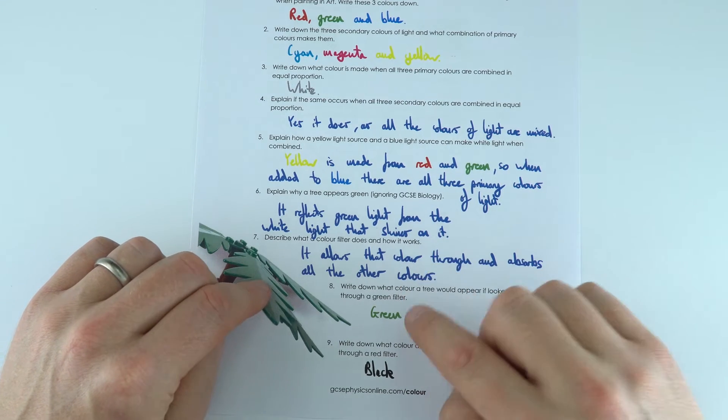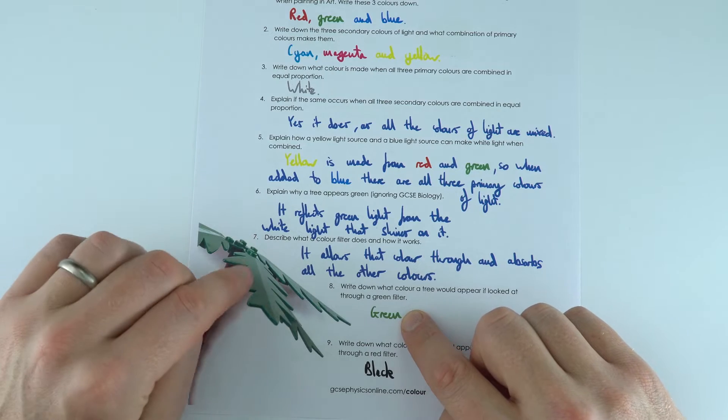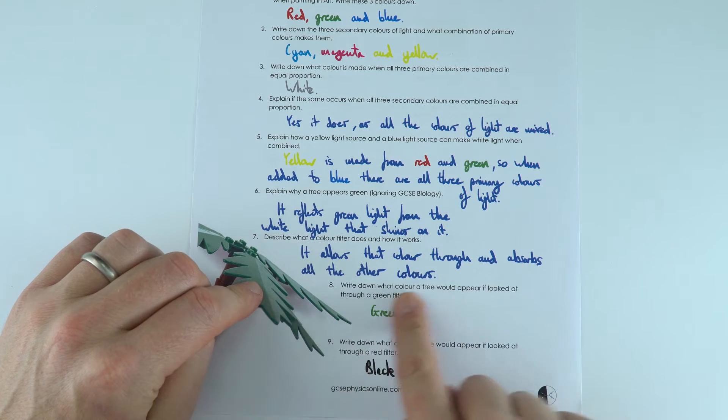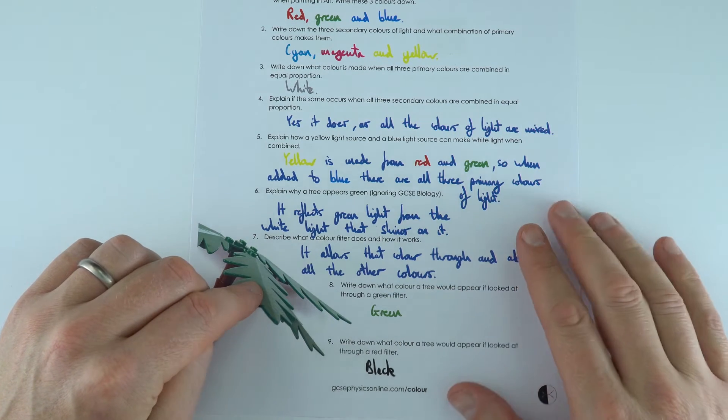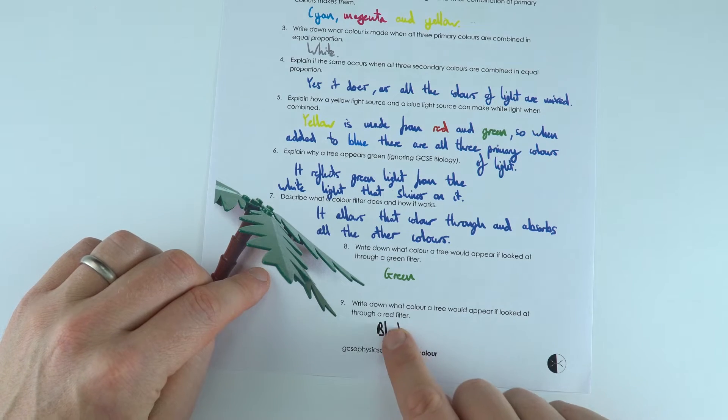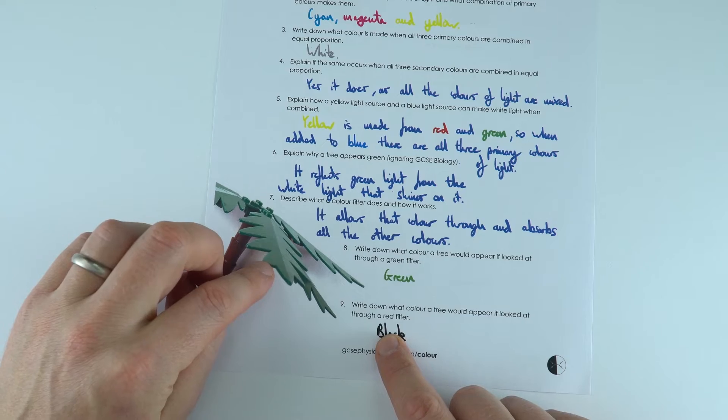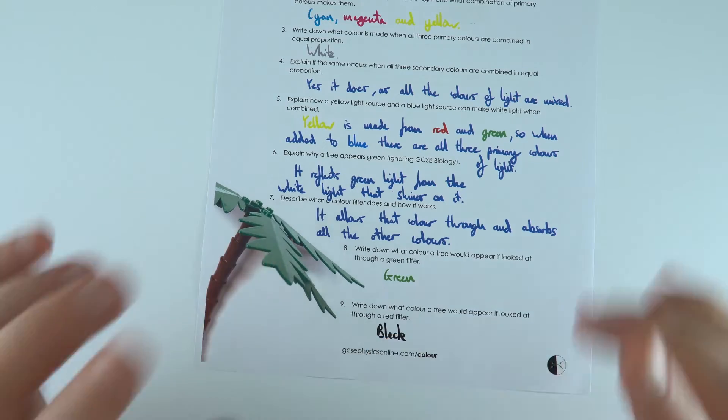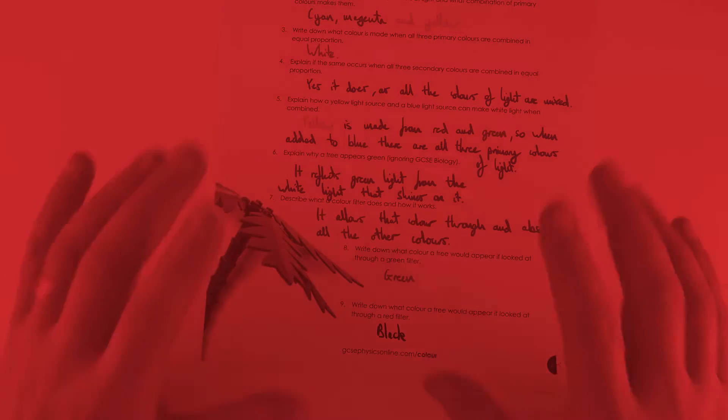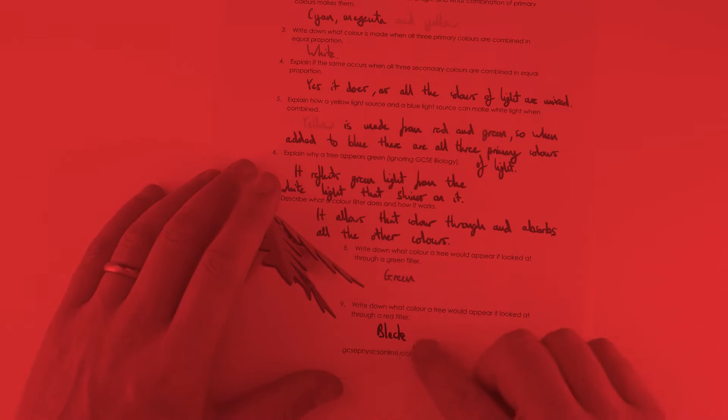If you look at a tree through a green filter it appears green, or the green bits appear green, because that green light can get through that green filter. But if you look at it through a red filter, that red filter stops the green light getting through, no light gets through and therefore it appears black. If you have a red filter at some point, go outside, have a look at some trees and see how much darker they appear through that red filter.